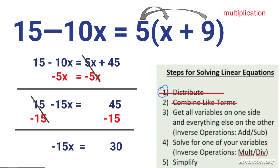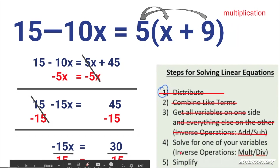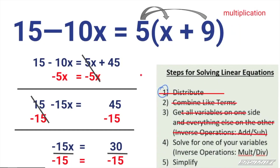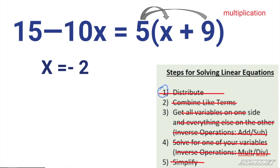I've now done all the adding and subtracting I can do, so it's time to move to step four, where I need to undo multiplication and division — solving for the variable. I have negative 15x, so how do I get rid of the 15? When you have the coefficient next to the variable, that means multiplication, so I divide. Divide both sides by negative 15. Negative 15 divided by negative 15 is positive 1 — we don't write the 1 in front of a variable. And 30 divided by negative 15 is negative 2.